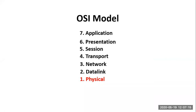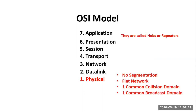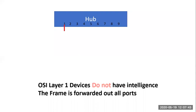Let's hone in on the OSI model at the physical layer. The physical layer offers no segmentation — no matter how many physical interfaces, you have one common collision domain and one common broadcast domain. Test takers know this is called a flat network. At layer one we find hubs, also known as repeaters, used to extend Ethernet beyond its 328-foot limitation. A hub will receive a frame and repeat that frame out all ports, including the port on which it arrived, so it does not offer intelligence.